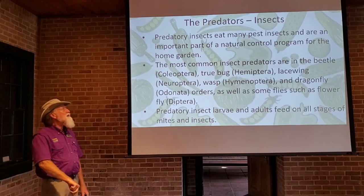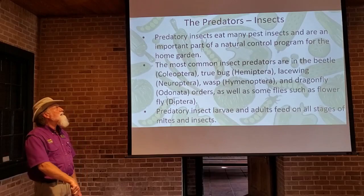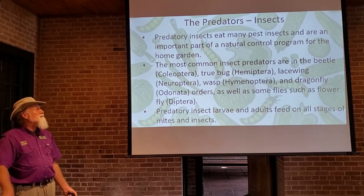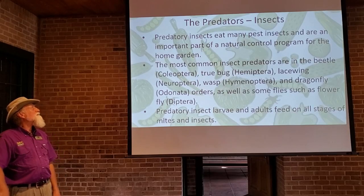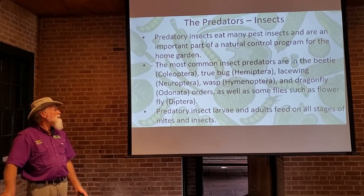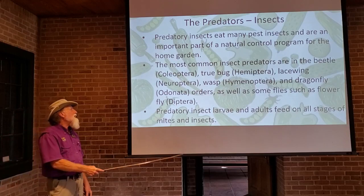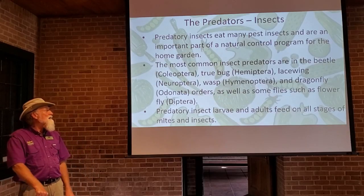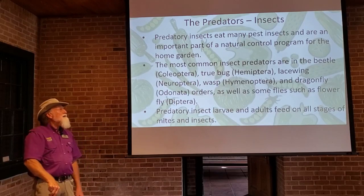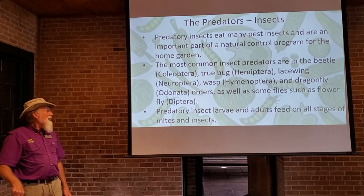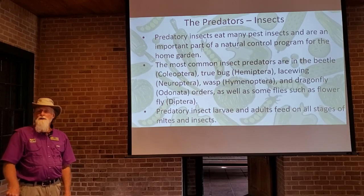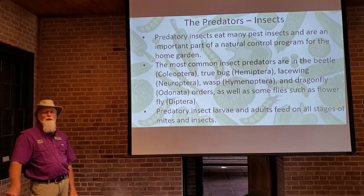Now we enter one of the larger groups — the predatory insects. The most common predators belong to the beetle family Coleoptera, true bugs Hemiptera, lacewings Neuroptera, wasps Hymenoptera, dragonflies Odonata, and even flies like the flower fly in Diptera. The predatory insect larvae and adults will feed on all stages of mites and insects — everything from eggs all the way up to adults.